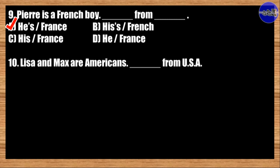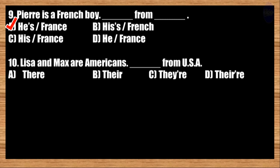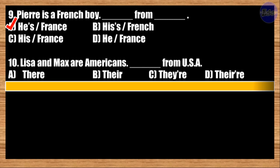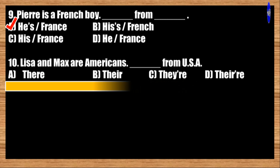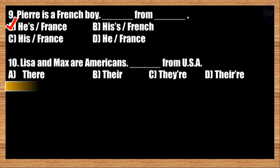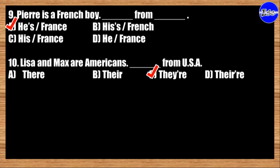Number ten: Lisa and Max are Americans. Blank from USA. A: Their; B: They; C: They're; D: They were. The correct answer is option C. Lisa and Max are Americans. They're from USA.